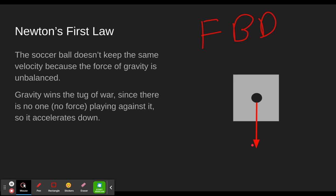The soccer ball doesn't keep the same velocity. As it's going up, it's slowing down. And as it's coming down, it's speeding up. And it's changing directions as well. It doesn't keep the same velocity because the force of gravity is unbalanced. There's no other force up here that's balancing out this force of gravity. So gravity wins the tug of war, since there's no one or no force playing or pulling against it. So it accelerates down.